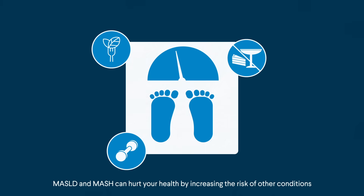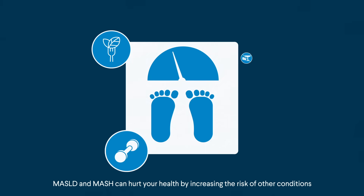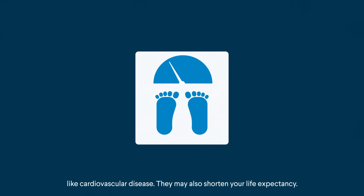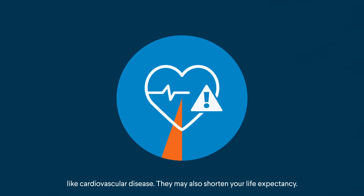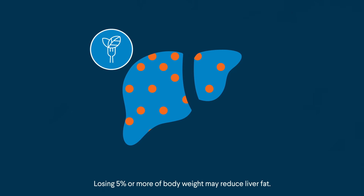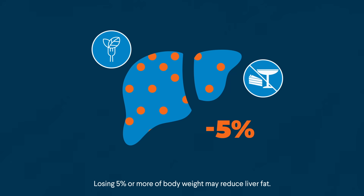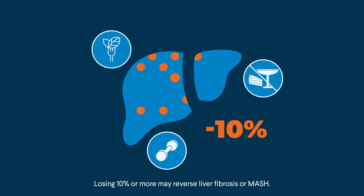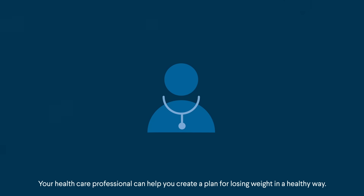MASLD and MASH can hurt your health by increasing the risk of other conditions like cardiovascular disease. They may also shorten your life expectancy. While there's no cure for MASLD or MASH, lifestyle changes can make a big difference. Losing 5% or more of body weight may reduce liver fat. Losing 10% or more may reverse liver fibrosis or MASH. Your healthcare professional can help you create a plan for losing weight in a healthy way.